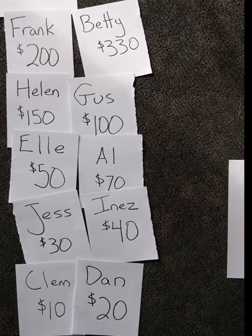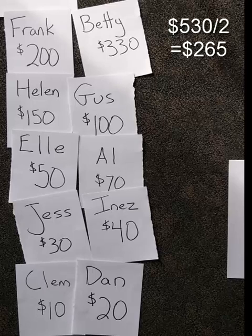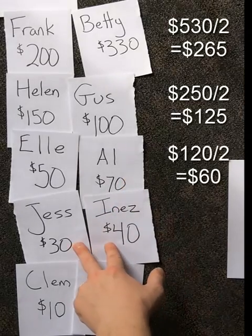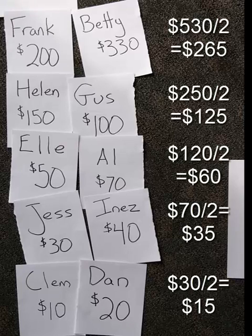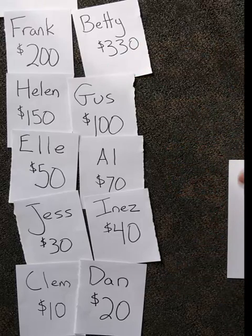We can also talk about the average wealth of each quintile. The average wealth of the top quintile is $200 plus $330 equals $530, divided by 2, which is $265. The average wealth of the second quintile is $150 plus $100 divided by 2, which is $125. The average wealth of the middle quintile is $60, the fourth is $35, and the bottom is $15. So with quintiles, you can discuss the percent share of all wealth and the average or mean wealth held by each quintile.